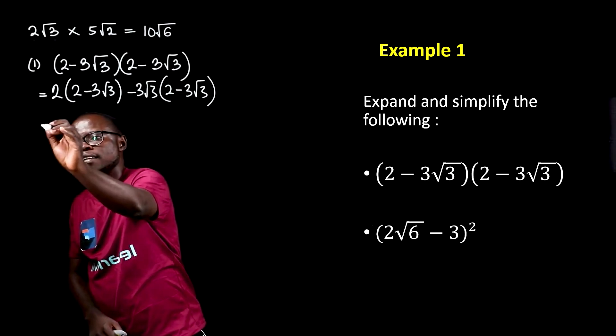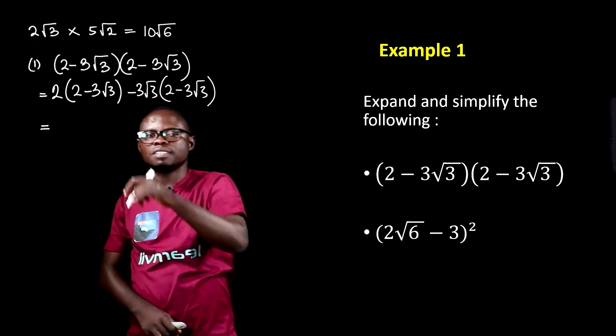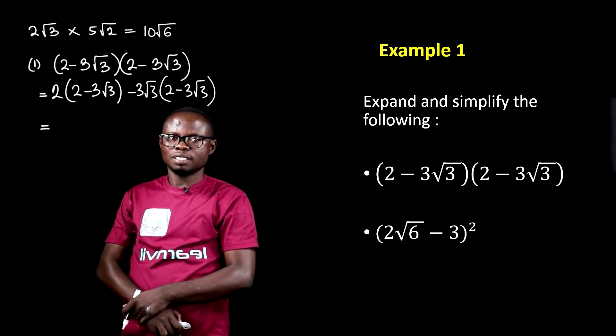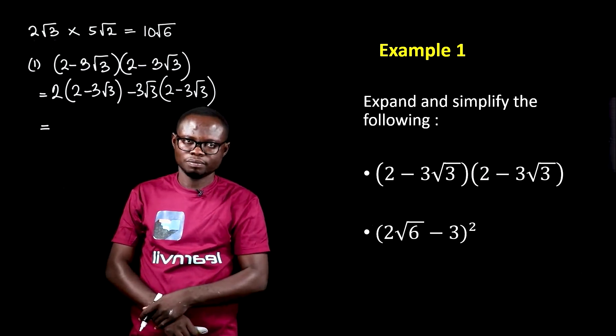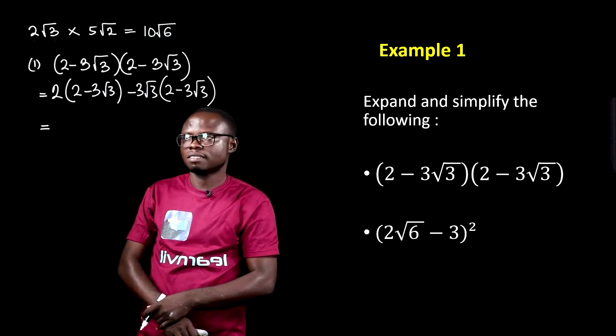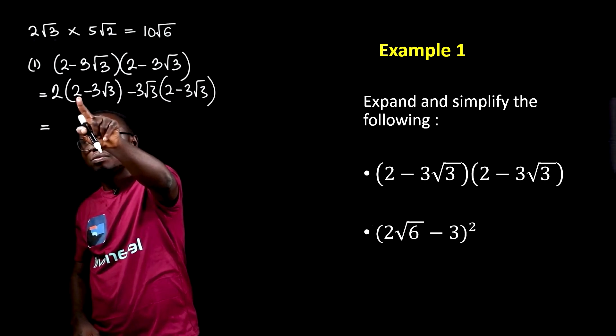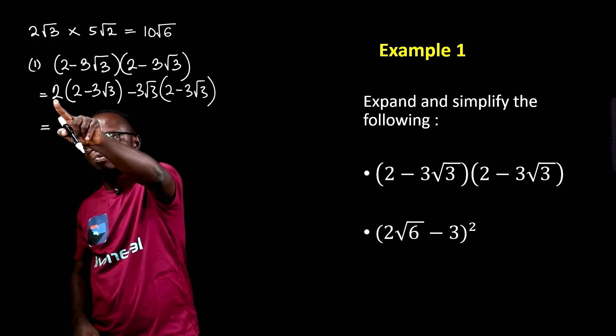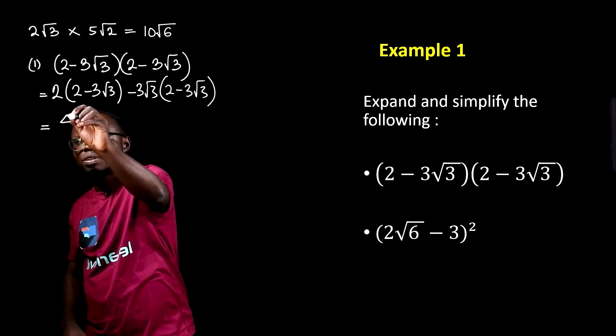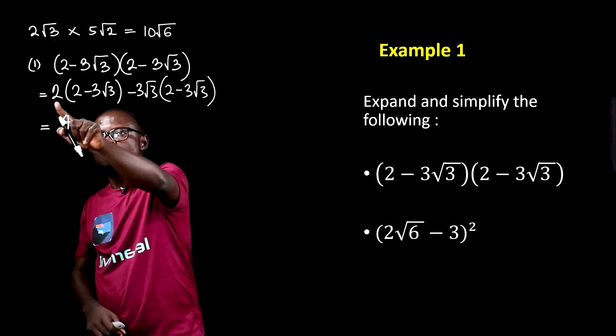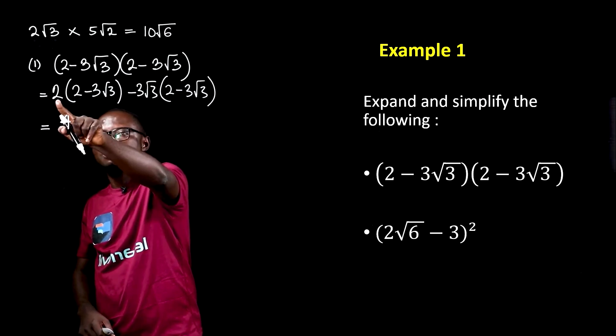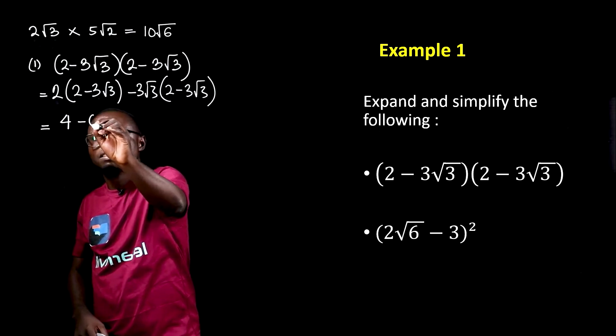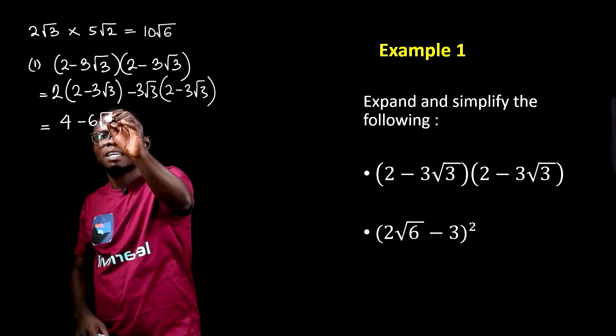We can further remove this bracket using the distributive property of multiplication over subtraction. In that, this 2 multiplies this 2, then minus this 2 multiplies 3 root 3. So 2 times 2, we get 4. 2 times negative 3 root 3, remember this is outside, it will multiply the outside, we get minus 6 and then the root 3 comes.